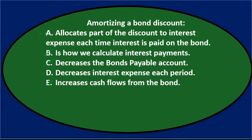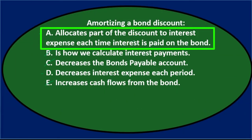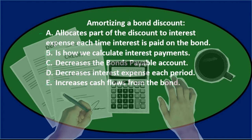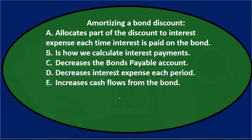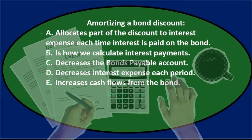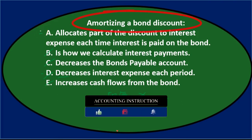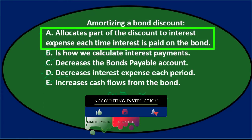Thinking it through with a journal entry: we're allocating the bond discount to interest expense to get rid of it over the time period. The bond discount is a contra liability account with a debit balance, so when we amortize it we credit the discount. That credit reduces the discount. On the other side, we debit interest expense — and since interest expense is a debit-balance account, debiting it increases interest expense, not decreases it. So D is wrong, and the answer is A: amortizing a bond discount allocates part of the discount to interest expense each time interest is paid on the bond.